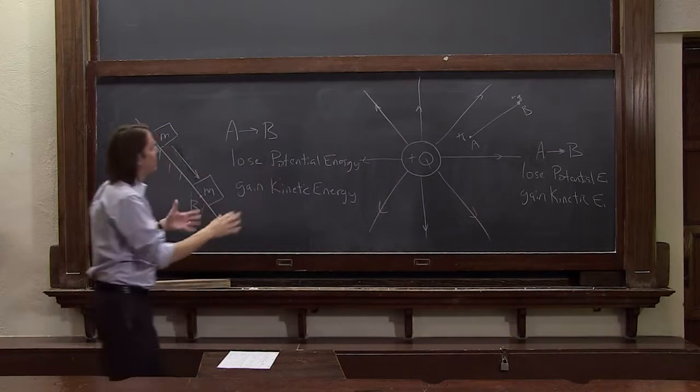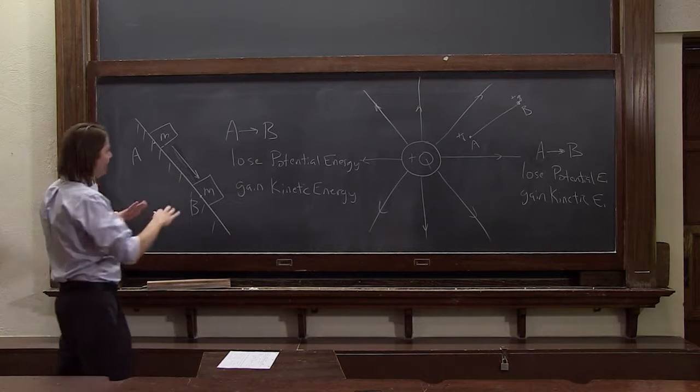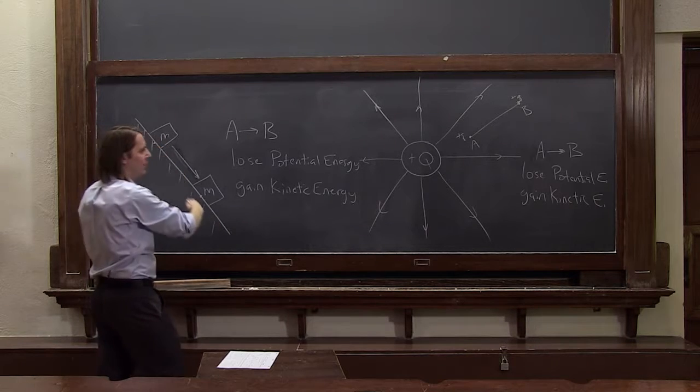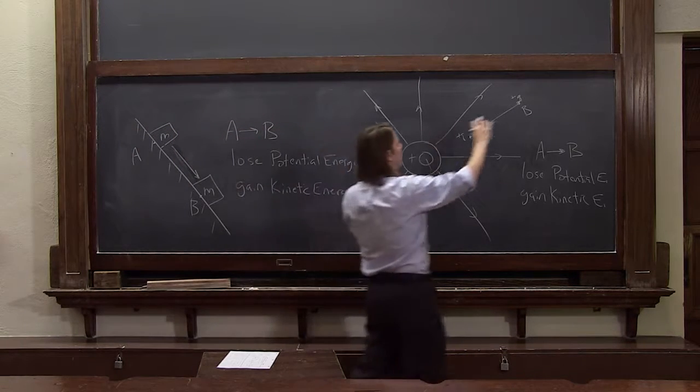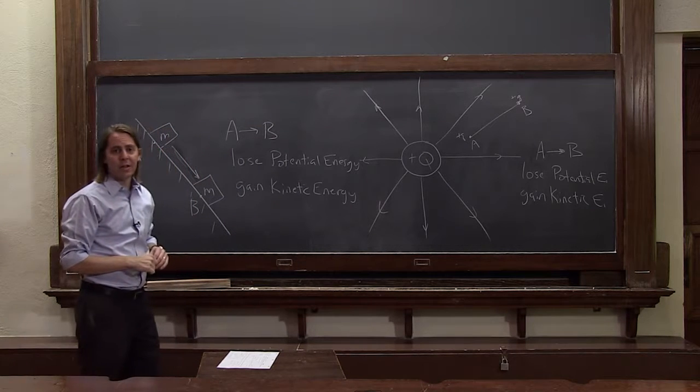So when you're thinking about these, realize you can think of them exactly the same. Physically, it's the exact same thing. The ramp represents a way to move up and down in gravitational potential energy. A point charge near a big charge represents a way to move up and down in terms of electrostatic potential energy.